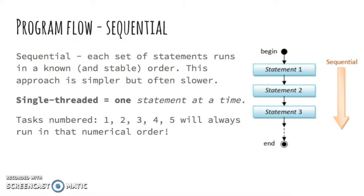So far in this course you've learned how to write what's called sequential programs in Python. In your programs you may have printed out the words hello world, sorted a list of numbers, and read from a file. This known ordering of a program's flow is referred to as sequential ordering or single threading. In a program like this, the program must wait for the numbers to be sorted to begin the task of reading from a file, regardless of how long it may take or how important reading the file is. This approach is straightforward but oftentimes is not ideal, which we will discuss in a bit.